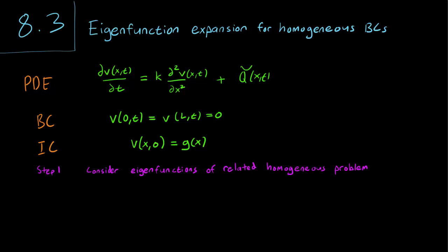Our first step is to ignore the non-homogeneous part for now and consider what eigenfunctions we get. So we will get a boundary value problem with the Dirichlet boundary conditions V(0) equals V(L) equals zero. So our eigenfunctions are going to satisfy this equation and the boundary conditions.